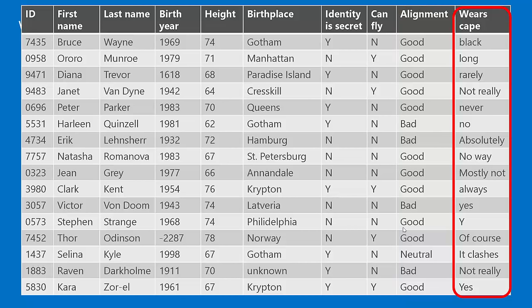We finally get to 'wears a cape' — we treat the target variable just like any other: look through it, think about what it means, and unify it. Now we have a nice clean, rectangular, non-empty, uniform representation. This data is ready to start processing in an algorithm.